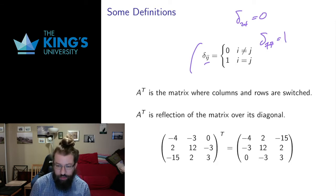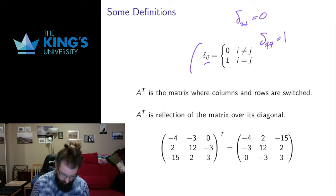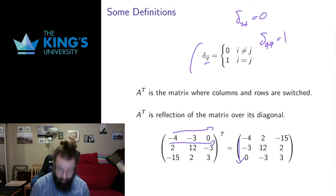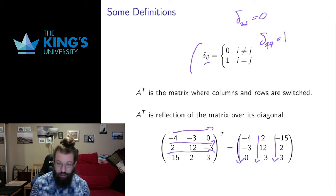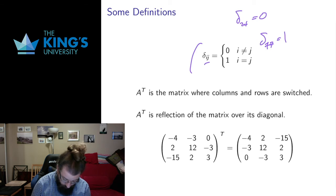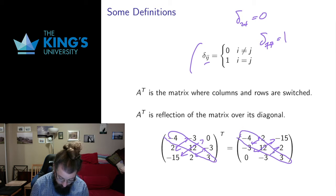I also wanted to define the transpose. If I have a matrix, the transpose — written A superscript T — is the matrix where the columns and the rows are switched, equivalently a reflection over the diagonal. For example, the row (4, -3, 0) becomes the column (4, -3, 0), and the row (-15, 2, 3) becomes the column (-15, 2, 3). The diagonal stays the same, but things across the diagonal are flipped: the entries 2 and -3 become -3 and 2, and so on.